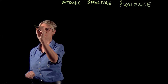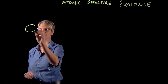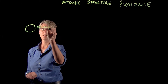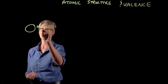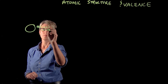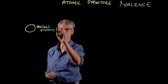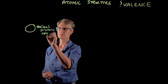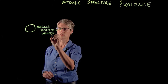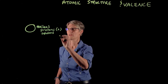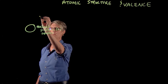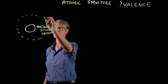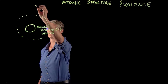So an atom has a nucleus — I'm going to draw a nucleus right here. In that nucleus are protons, which are positively charged, and neutrons, which do not have a charge.